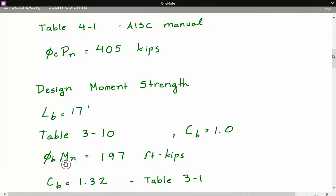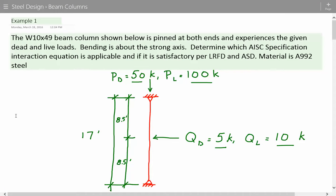Hey everybody, this is example number one for steel design for beam columns. The problem statement that we have is we have a W10x49 beam column shown below.